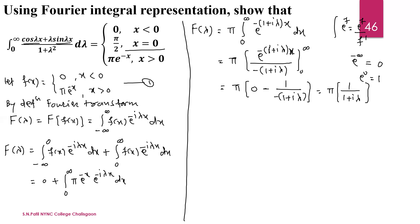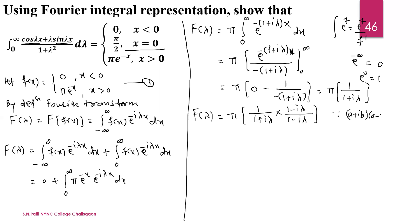Now we remove the imaginary number from the denominator. For that we multiply and divide by the conjugate of (1 + iλ), which is (1 − iλ). Using the formula (a + ib)(a − ib) = a² + b², the denominator becomes 1 + λ². So F(λ) = π(1 − iλ)/(1 + λ²).